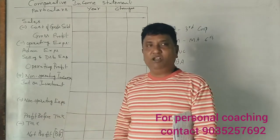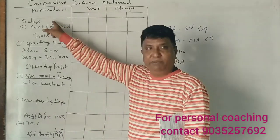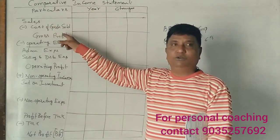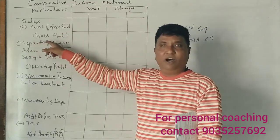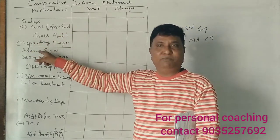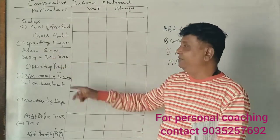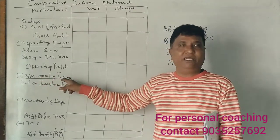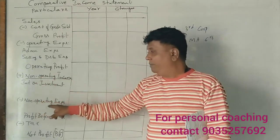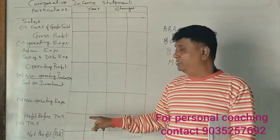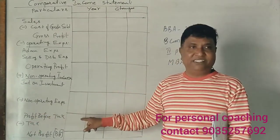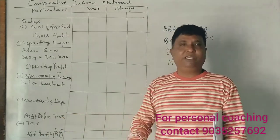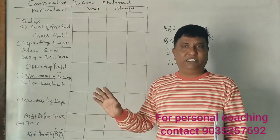Now, let us know what is Comparative Income Statement. The income statement is: Sales minus cost of goods sold equals gross profit. Minus operating expenses — that is administration and selling and distribution expenses — gives operating profit. Then add non-operating income, minus non-operating expenses, gives profit before tax. Minus tax gives profit after tax.